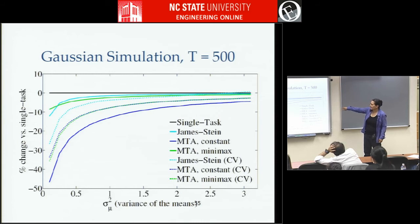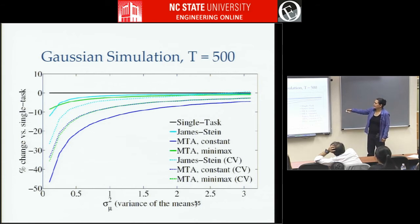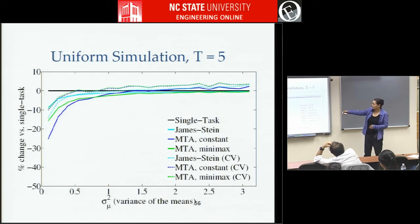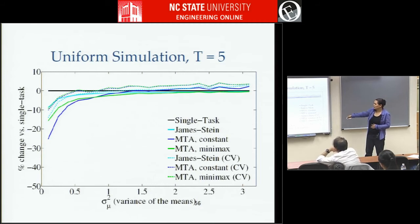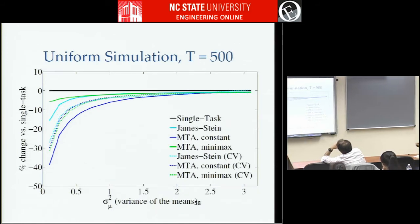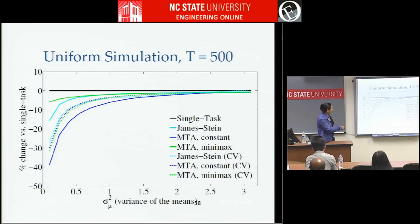In the uniform simulations things are mostly similar, except to notice that some lines now pop up and get worse than the standard single-task averages — if the means are too far separated, cross-validations tend to do worse, and even MTA constant starts to do worse if you're too far away. Whereas James-Stein never did super well but also tends not to do worse. With 500 tasks everything gets smoother and safer, and gains up to around 40% are possible by bringing this information together.